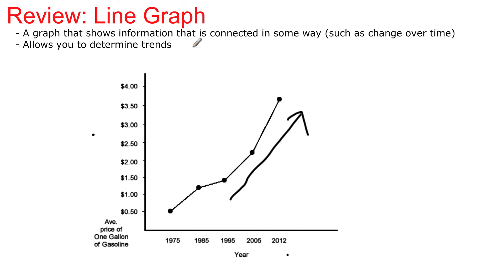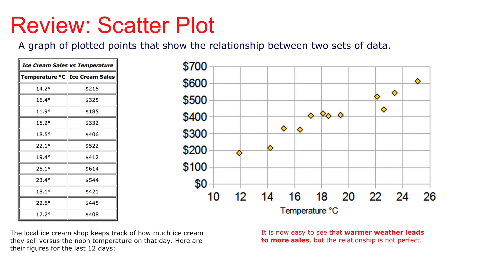We have a few more things to talk about, and one of them is very similar to a line graph without the line: a scatter plot. A scatter plot is a graph of plotted points that show the relationship between two sets of data. In this case, it's the temperature at noon every day for a local ice cream shop that wants to track how much they sold over the past 12 days given the temperature. There's no line here — the points are not connected.